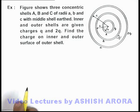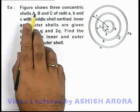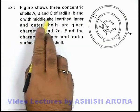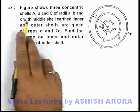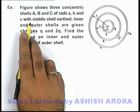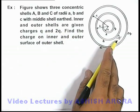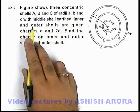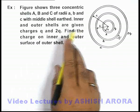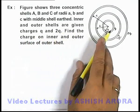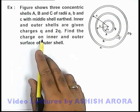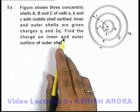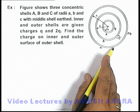In this example, the figure shows 3 concentric shells A, B, and C of radii a, b, and c, with the middle shell B connected to earth. The inner and outer shells are given charges q and 2q respectively, and we are required to find the charge on the inner and outer surface of the outer shell C.